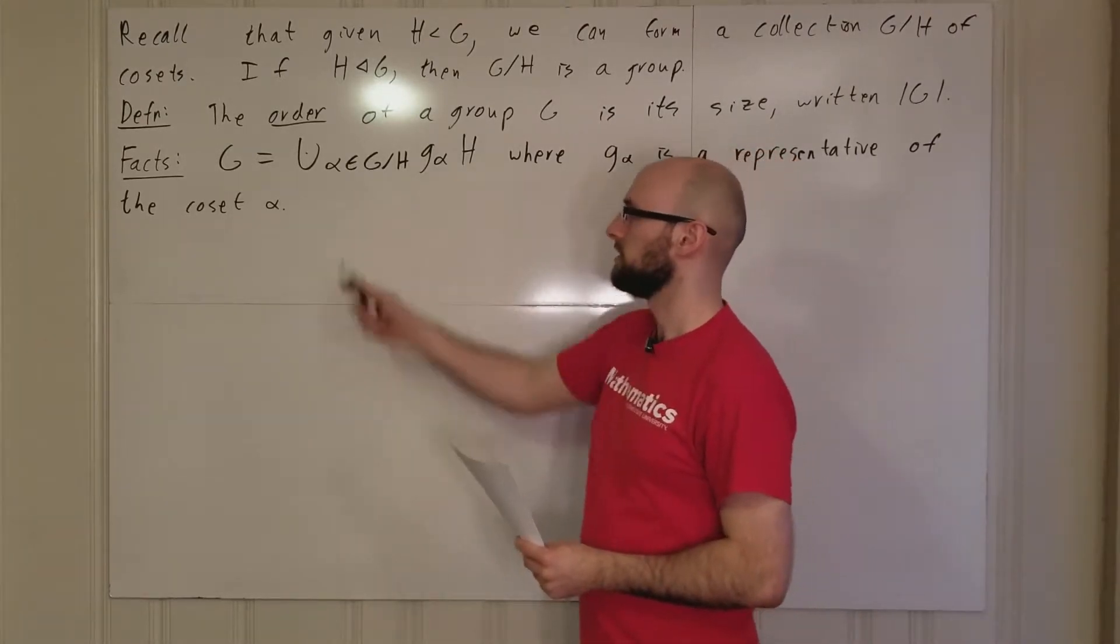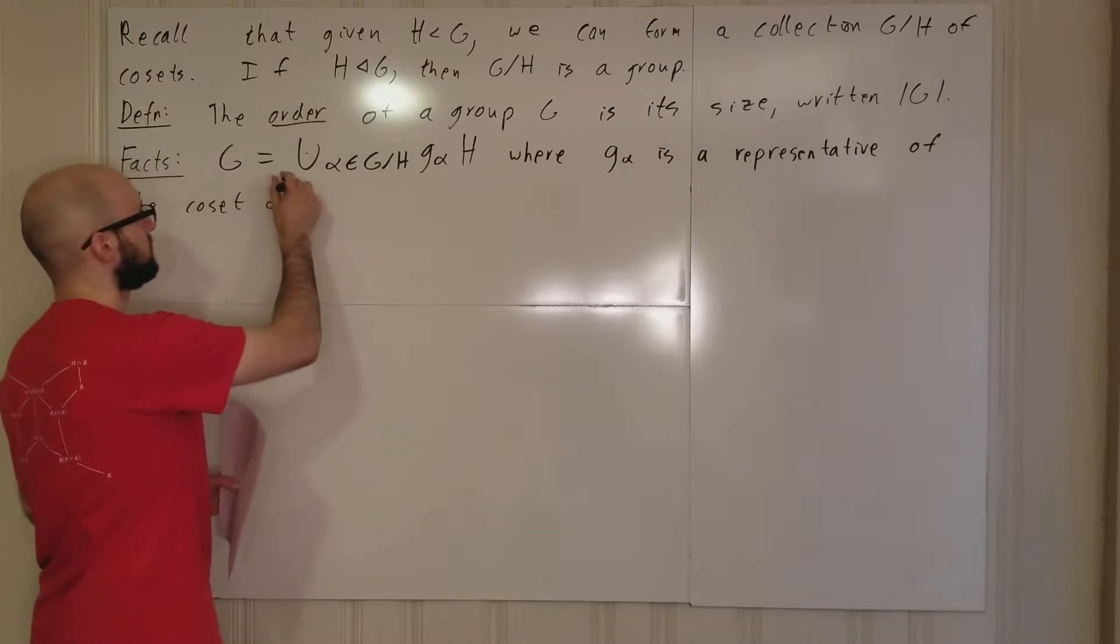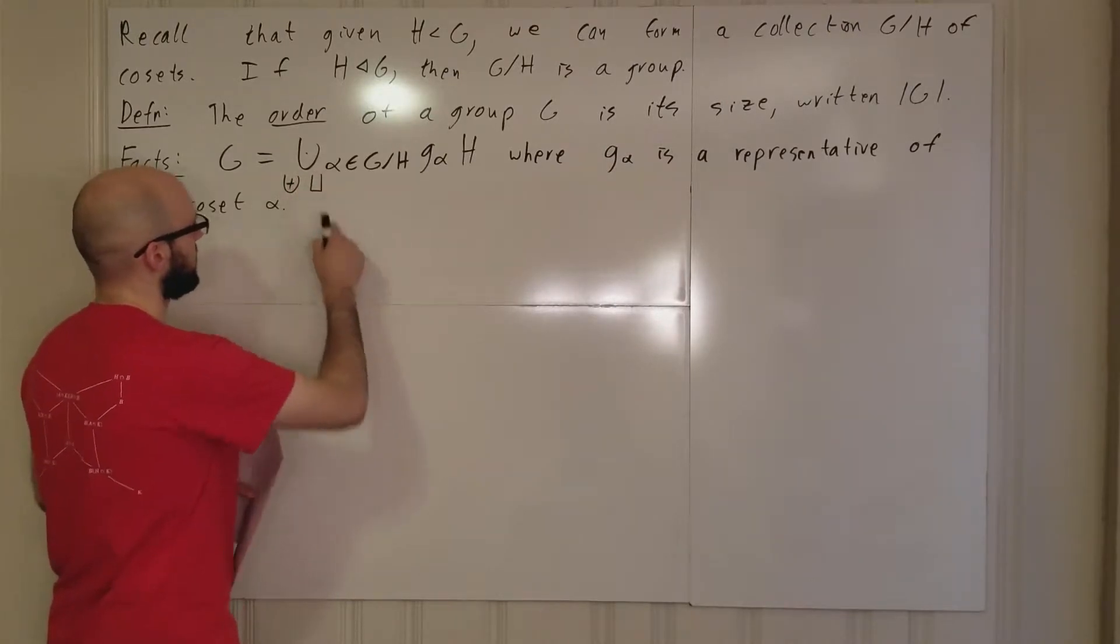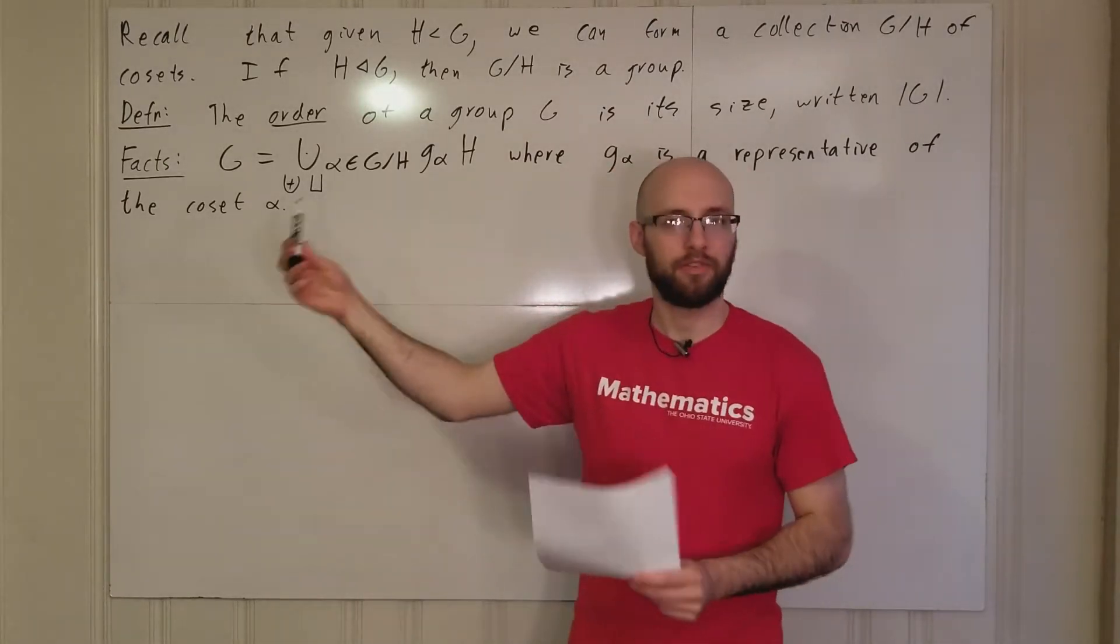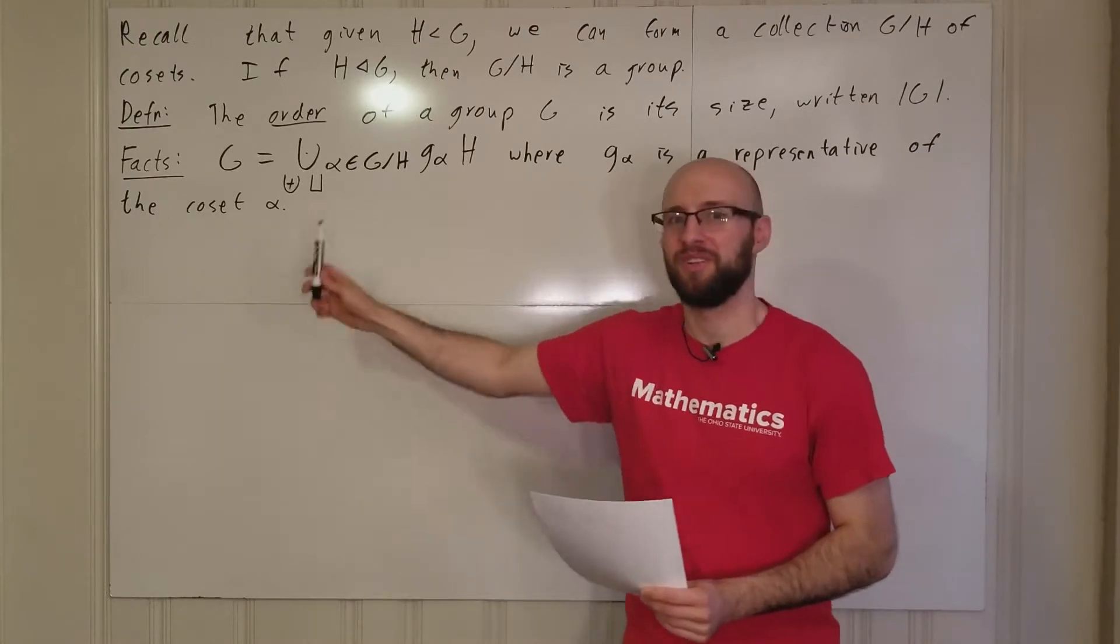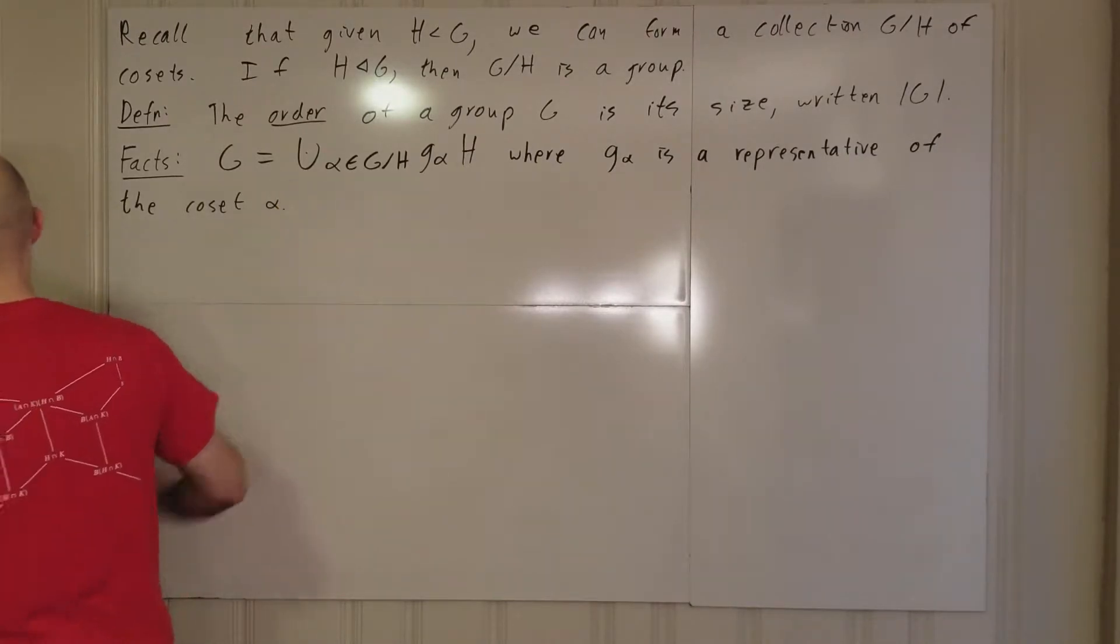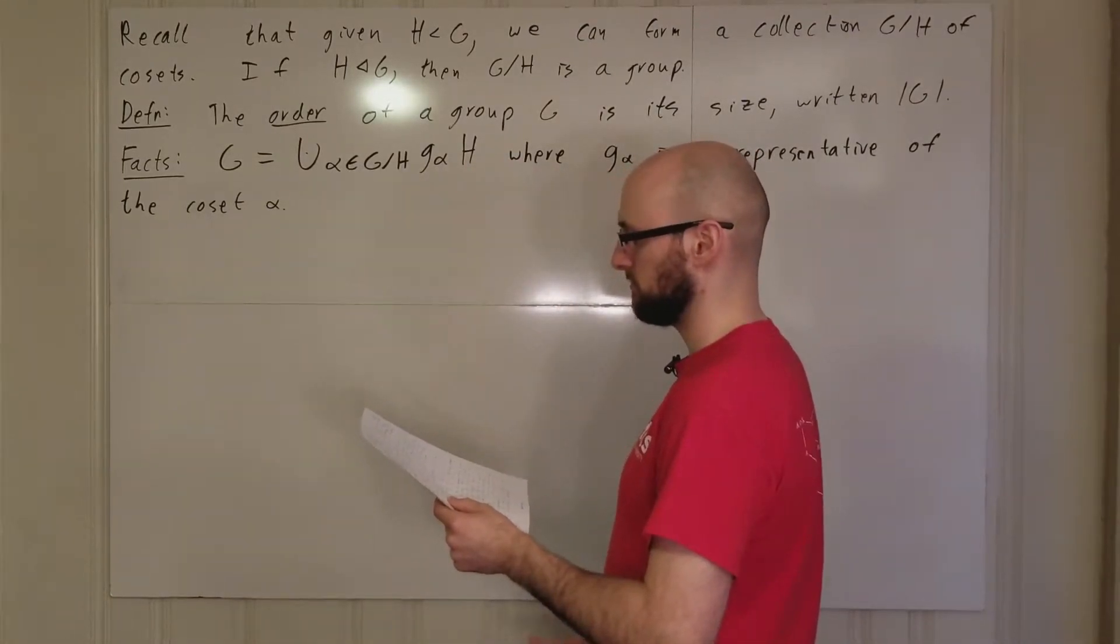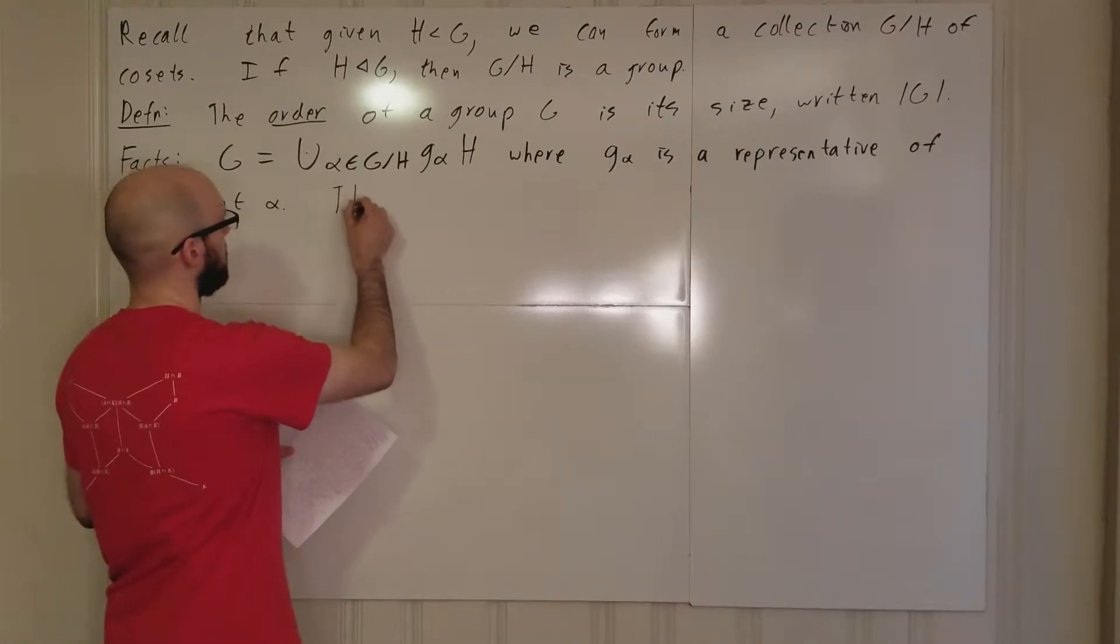This is a disjoint union. Sometimes we write it as a union with a plus sign inside it, or with a dot. I've learned the union with the dot and plus sign from analysts, so I'm probably going to use those. The brackety one I've learned from algebraists. They all mean the same thing—we're taking a disjoint union.